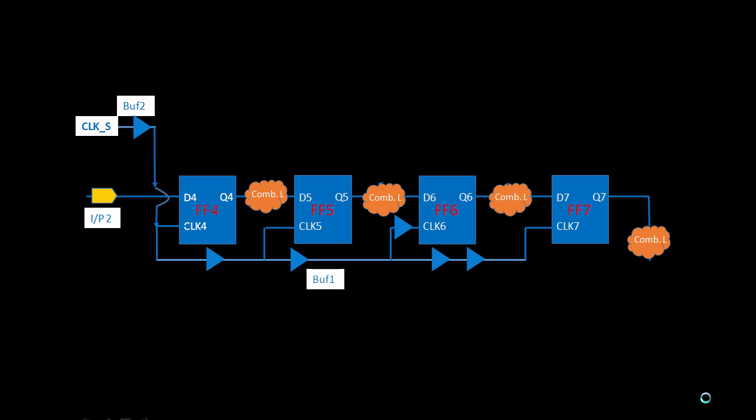Hello everyone. So till now we have discussed about skew — how skew behaves in terms of setup and hold violations. If we decrease the skew, there are chances of setup violation; if we increase the skew, there are chances of hold violation. We also discussed that if skew is greater than the data path delay — clock-to-Q and Q-to-D6 delay — the circuit is functioning incorrectly.